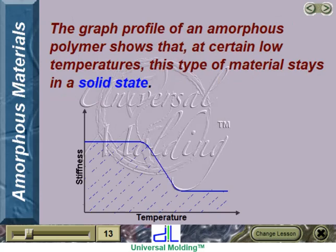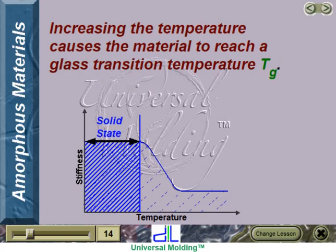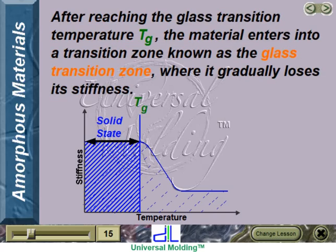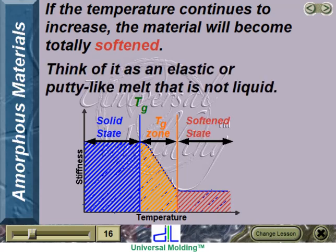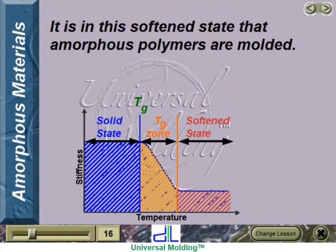The graph profile of an amorphous polymer shows that at certain low temperatures, this type of material stays in a solid state. Increasing the temperature causes the material to reach a glass transition temperature, Tg. After reaching Tg, the material enters into a transition zone known as the glass transition zone, where it gradually loses its stiffness. If the temperature continues to increase, the material will become totally softened — think of it as an elastic or putty-like melt that is not liquid. It is in this softened state that amorphous polymers are molded.